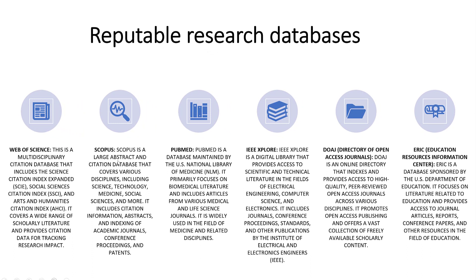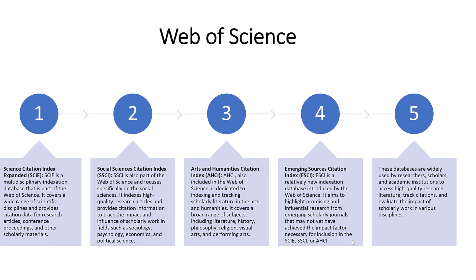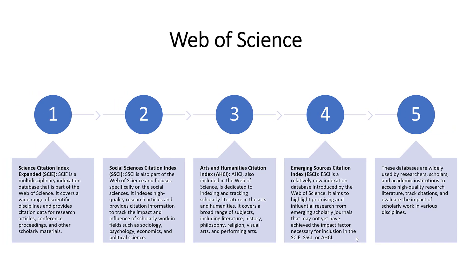Web of Science is a multi-disciplinary citation database that includes the Science Citation Index, the Social Sciences Citation Index, the Arts and Humanities Citation Index, and others. Scopus covers many disciplines including science, technology, medicine, and social sciences. We also have other databases such as PubMed in medicine, IEEE Xplore in science, the Directory of Open Access Journals, and ERIC in education. But these two — Web of Science and Scopus — are the most prominent. Web of Science consists of several citation indices: Science Citation Index Expanded, Social Sciences Citation Index, Arts and Humanities, and Emerging Sources Citation Index.